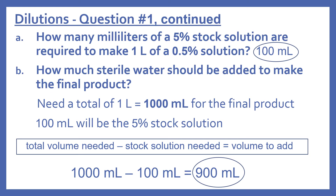Now part B of question one: How much sterile water should be added to make the final product? We need a total of one liter, which is 1,000 milliliters, for the final product. From part A, 100 milliliters will be the 5% stock solution. To find the volume to add, we take the total volume needed and subtract the stock solution needed: 1,000 milliliters minus 100 milliliters equals 900 milliliters. So we need 100 milliliters of the 5% stock solution and 900 milliliters of sterile water, making 1,000 milliliters of the 0.5% solution.